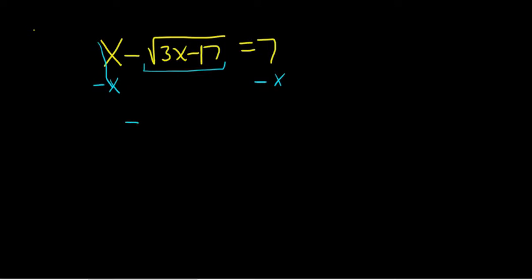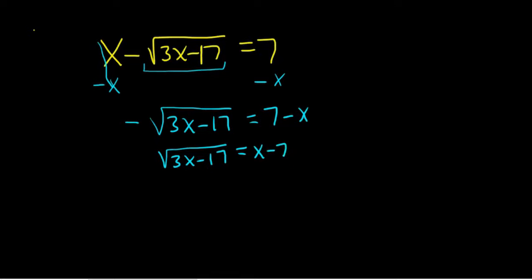This ends up being negative square root 3x minus 17 equals 7 minus x. Now we're going to go ahead and square both sides. But before we do that, you can multiply by negative 1. Let's do that to make it look better. So basically we're just going to flip the signs. And so this will become x minus 7, because you're putting a negative here and a negative here, so you're flipping the signs.